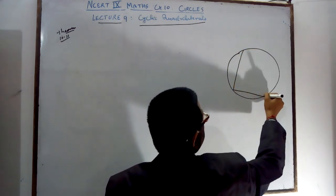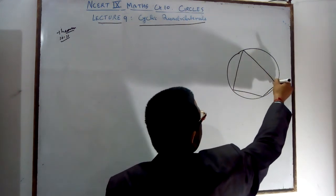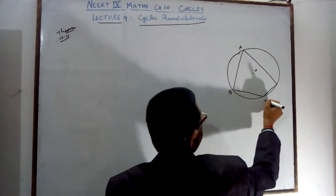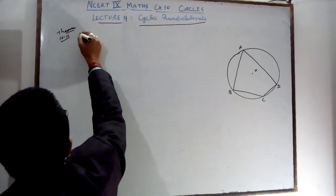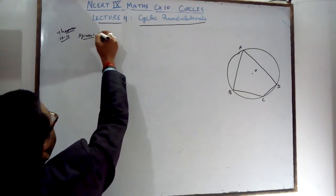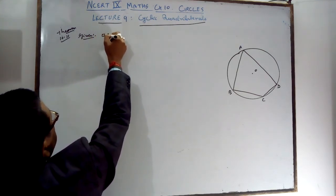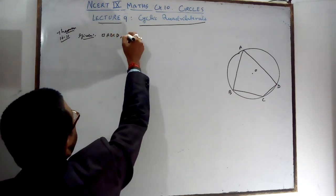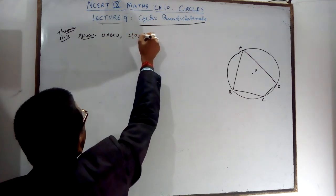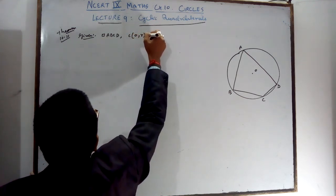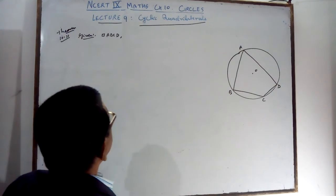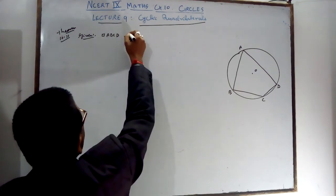The meaning of supplementary is that the sum of the opposite angles equals 180 degrees. Consider a Cyclic Quadrilateral with vertices A, B, C, D. Cyclic means all the vertices lie on the circle.